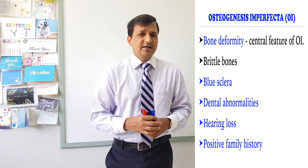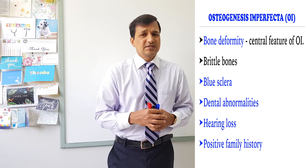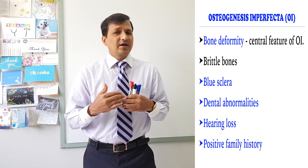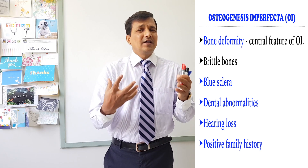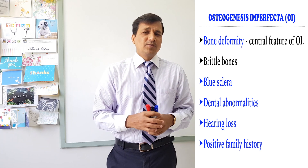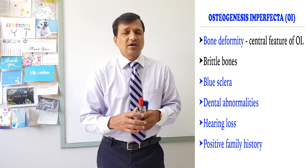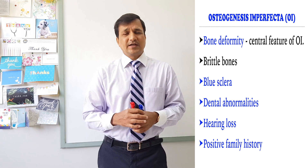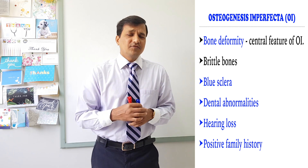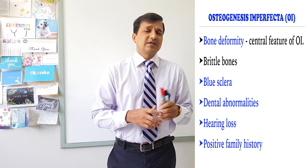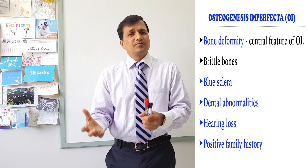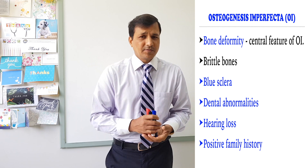Blue sclera occurs because of less collagen being synthesized — the sclera becomes so thin that the underlying choroid is visible, giving a bluish discoloration. Patients with osteogenesis imperfecta also show dental abnormalities, called dentinogenesis imperfecta, which can be seen in types 1, 2, and 3. Types 4, 5, 6, and 7 generally do not show dental abnormalities.